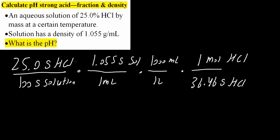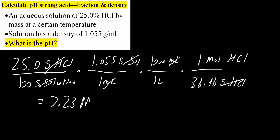Let's check our units. Grams of HCl cancel and we have moles of HCl. Grams of solution cancel and we have milliliters. Milliliters cancel and we have liters. So we have moles over liter — we have molarity. Using a calculator, we get 7.23 molar of HCl.